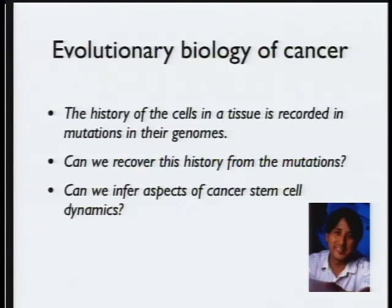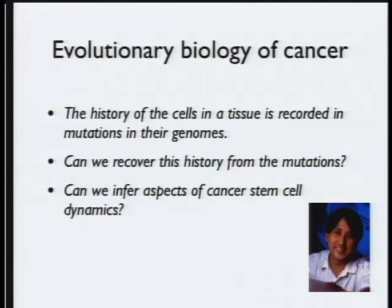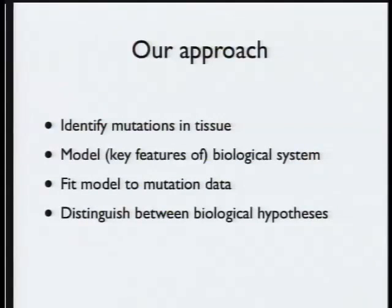The work I'm going to describe is the far downstream end of what Daryl Shibata and I — my colleague at USC — have been doing for about 15 years. The first thing in the evolutionary biology of cancer is that the history of these cells in a tissue is recorded in mutations in their genomes. It's precisely the premise used, for example, to use SNPs to discover how human ancestry has worked. The question is, can we recover the history of the way the tumor was growing from these mutations? And in particular, can we infer aspects of cancer stem cell dynamics from that?